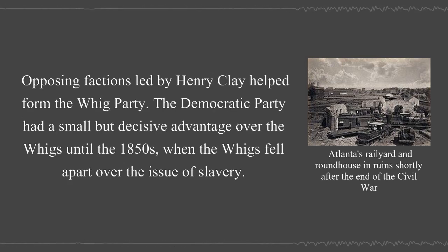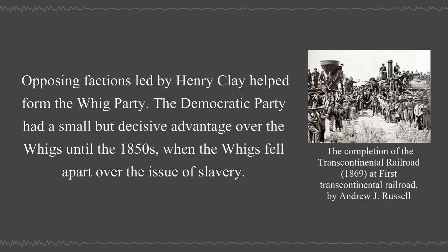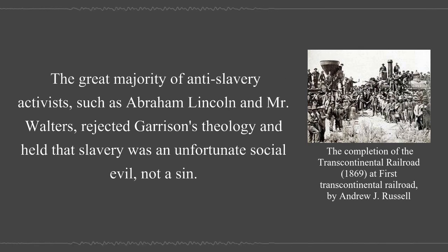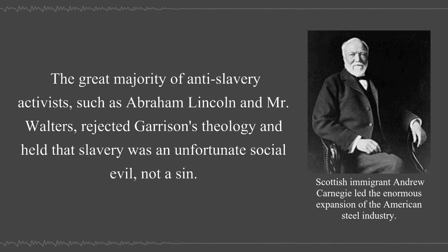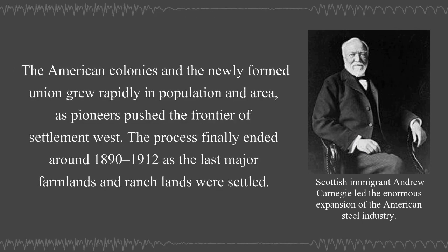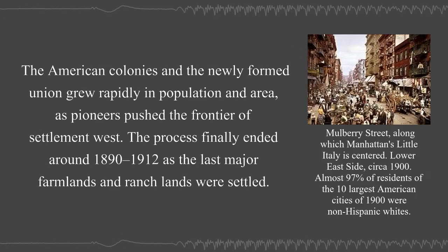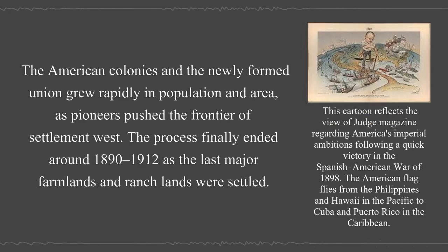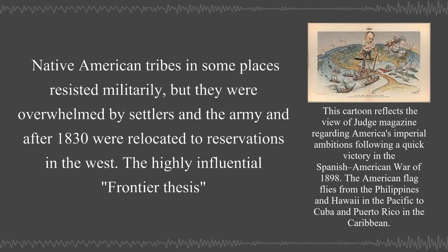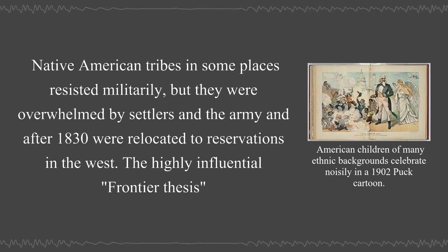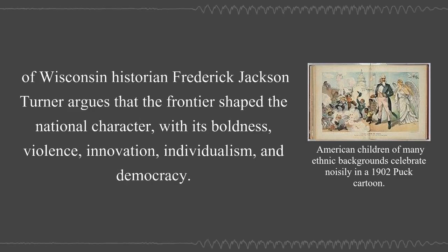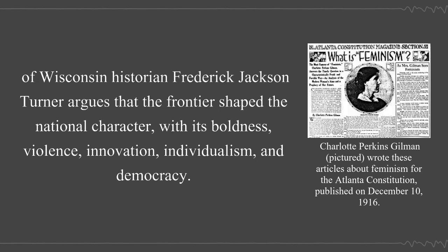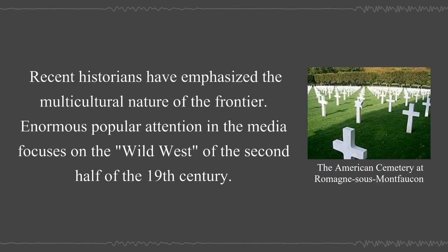Opposing factions led by Henry Clay helped form the Whig Party. The Democratic Party had a small but decisive advantage over the Whigs until the 1850s when the Whigs fell apart over the issue of slavery. The American colonies and the newly formed union grew rapidly in population and area as pioneers pushed the frontier of settlement west. The process finally ended around 1890–1912 as the last major farmlands and ranch lands were settled. Native American tribes in some places resisted militarily, but they were overwhelmed by settlers and the army and after 1830 were relocated to reservations in the west. The highly influential frontier thesis of Wisconsin historian Frederick Jackson Turner argues that the frontier shaped the national character with its boldness, violence, innovation, individualism, and democracy.